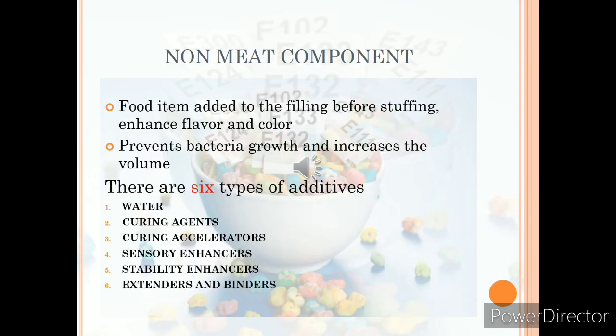Forcemeat has four compositions, with meat being one of them. The non-meat component items are added to enhance the flavor and color of the meat; they also prevent bacterial growth and increase the shelf life. There are six types of additives: water, curing agent, curing accelerator, sensory enhancer, stability enhancer, and extenders and binders.